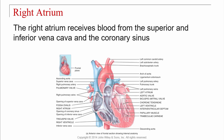In between the two ventricles is the interventricular septum; there's also an interatrial septum. Notice the wall of the right ventricle is much thinner than the wall of the left ventricle. Why? The right ventricle only pumps blood to the lungs, whereas the left ventricle pumps blood to the rest of the body.